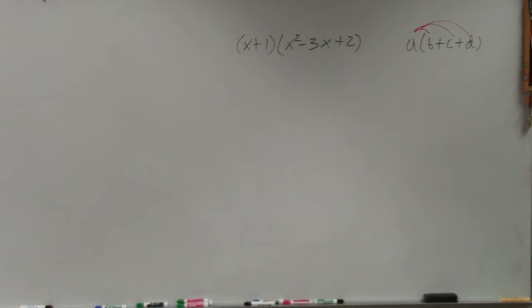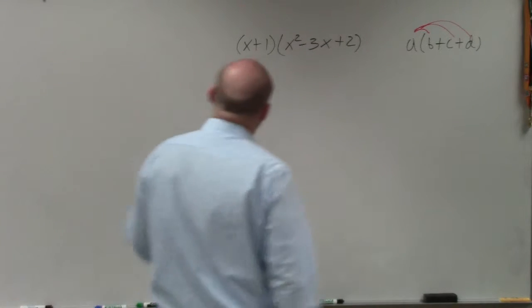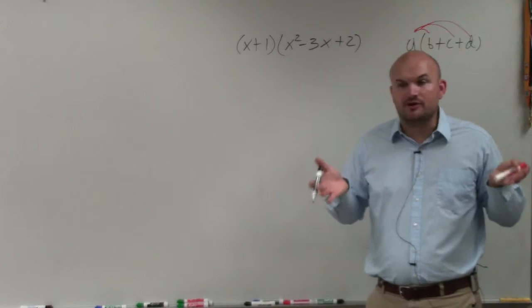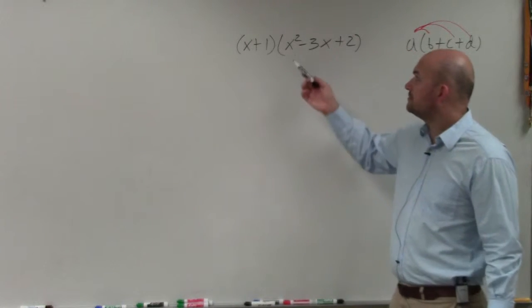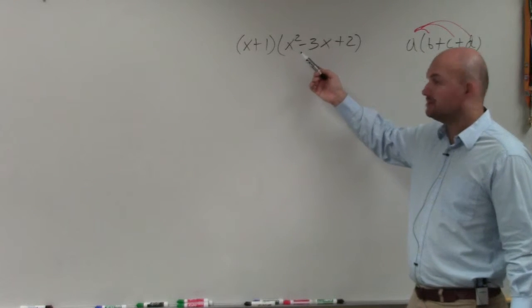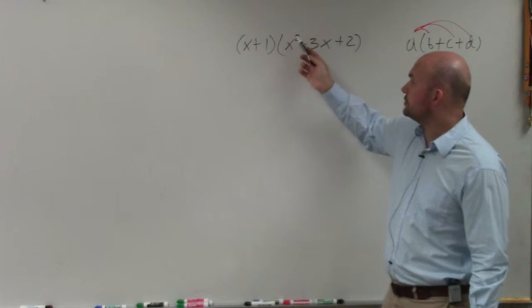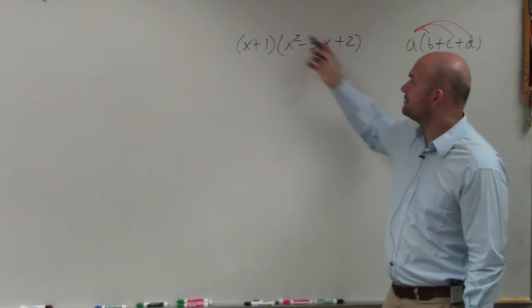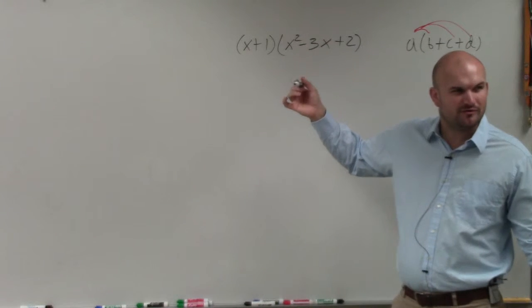Once you get to a problem like this, the only problem with FOIL is FOIL represents first, outer, inner, last. Well, when you have a trinomial, you can do the first terms, you can do the outer terms, but the inner, you've got to multiply that 3x times both of them. So it gets a little bit more confusing.